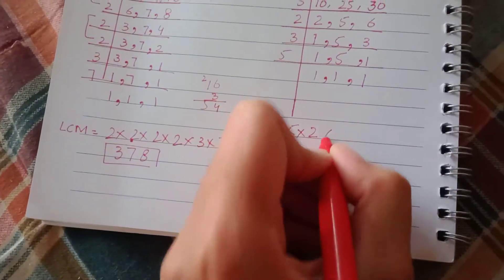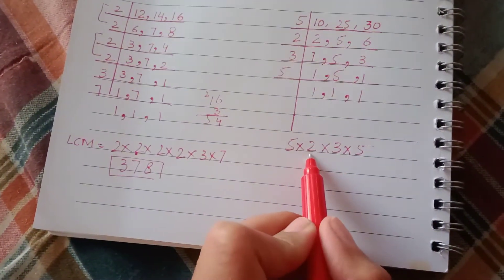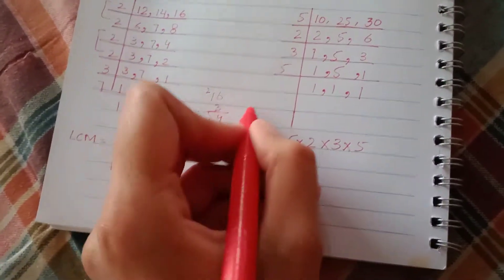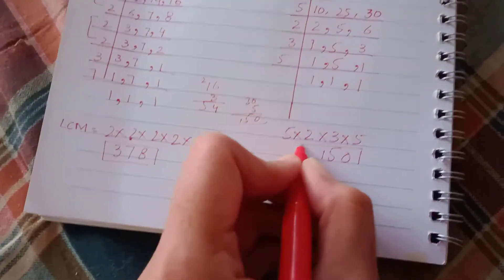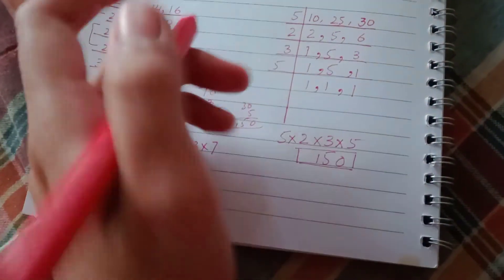5 multiply by 2 multiply by 3 multiply by 5 again. 5 times 2 is 10, 10 times 3 is 30, 30 times 5 is 150. So it will be the answer. You know, if you have 5 here, we can do this.